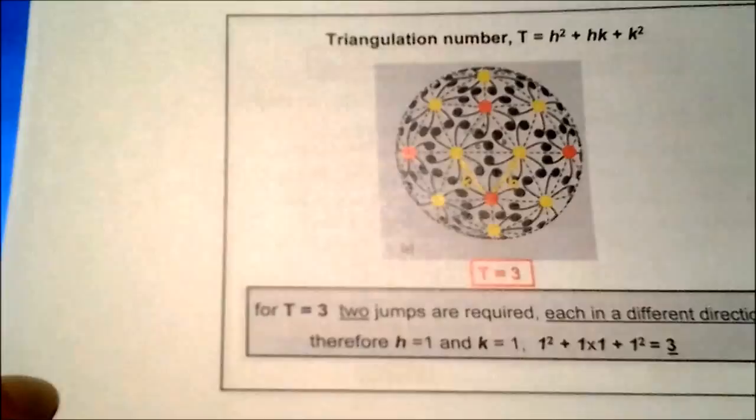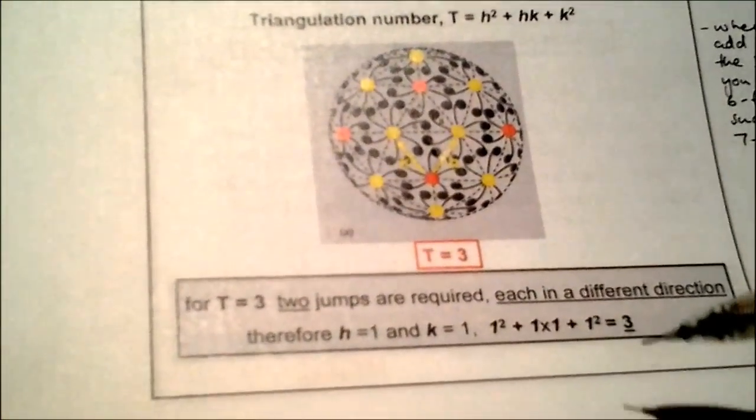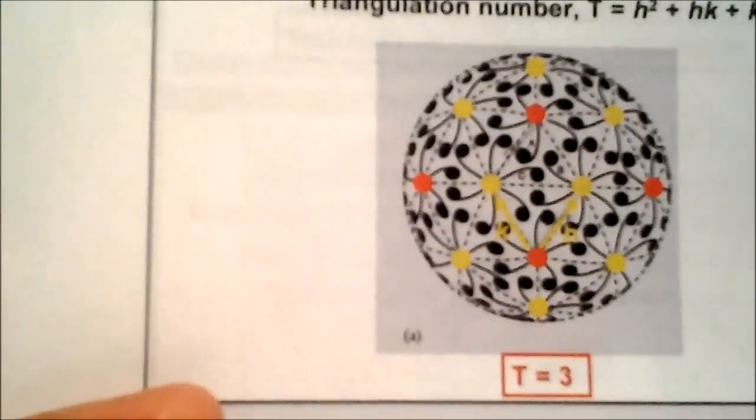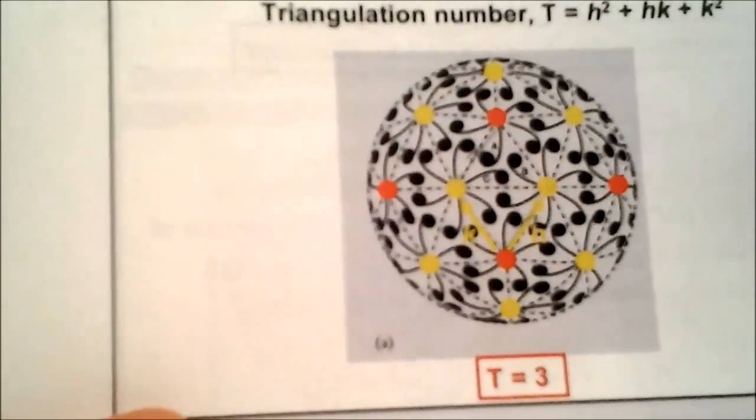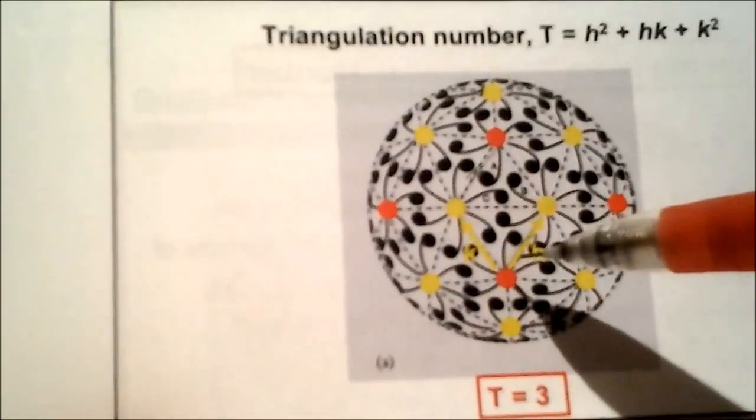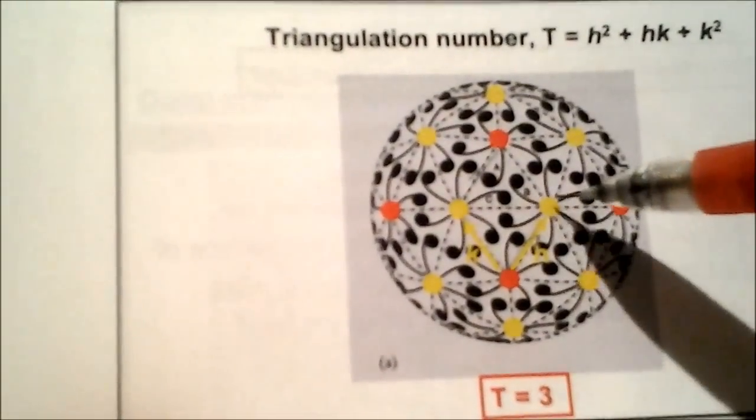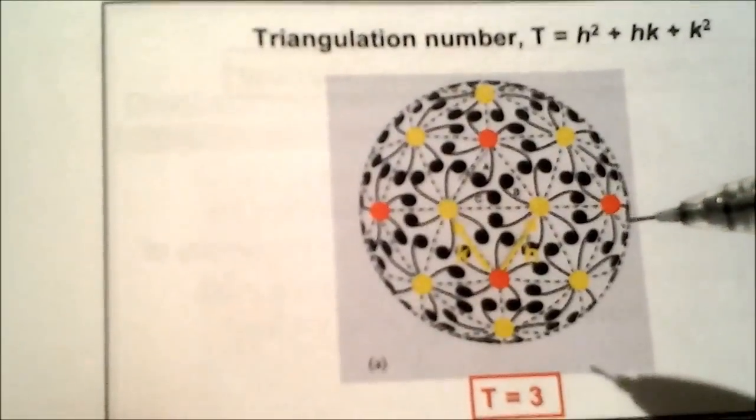This is for T=3. This one is a little more tricky. Here's the diagram right here. Let's say the red points are the five fold and the yellow points are the six fold.